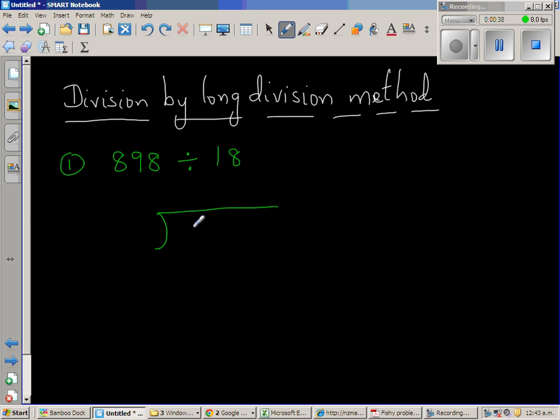So this is how you set up long division. I am dividing 898 by 18. As you know, 8 is in the units or ones place, 9 is in the tens place, and 8 is in the hundreds place. When you are dividing 898 by 18, you ask the question: 18 goes how many times in 8? Well, it doesn't go in 8. So you can say it goes zero times. This is the hundreds place.